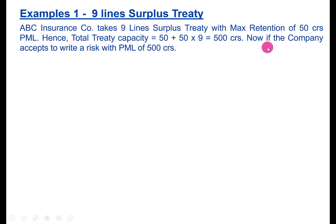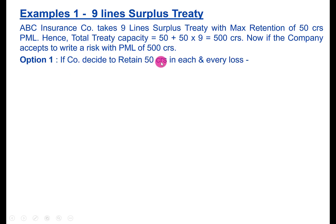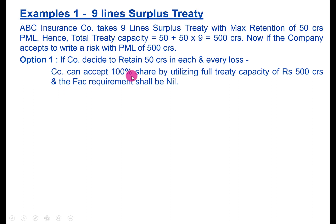Now let us assume the company decides to write a 100 percent share of a 500 crore PML risk. In Option 1, the company decides to retain the full 50 crores. Where PML is 500 crores and treaty capacity is 500 crores, the company can accept 100 percent share by utilizing the full treaty capacity, subject to retaining the maximum retention. The FACA requirement shall be nil.